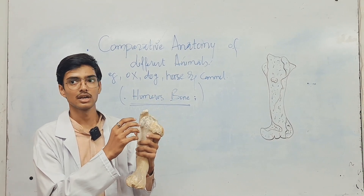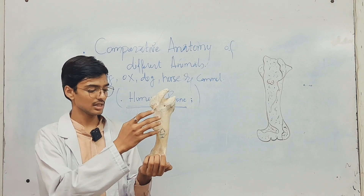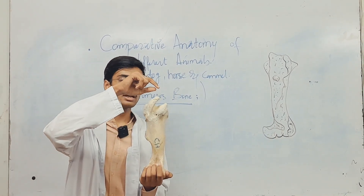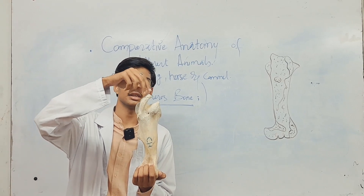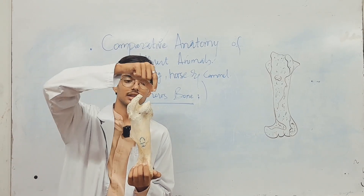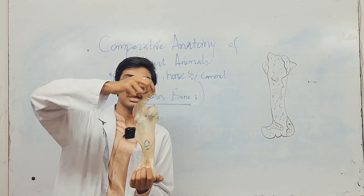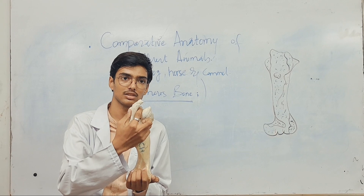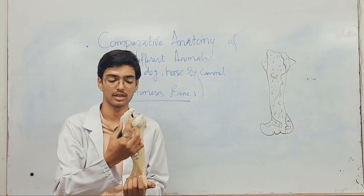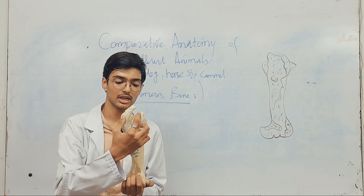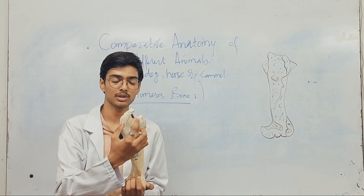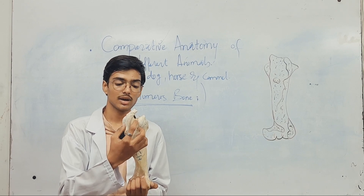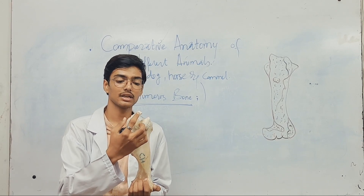Now let's discuss the tubercles. This is the cranial aspect of the humerus. From the cranial aspect, you can clearly see the tubercles. This is the greater tubercle, this is the lesser tubercle, and in between them is the intermediate. This groove here is called the bicipital groove or sulcus. There is also a groove — bicipital groove — present between the lesser and intermediate tubercles, but it is not as deep as the groove between the intermediate and greater tubercles.